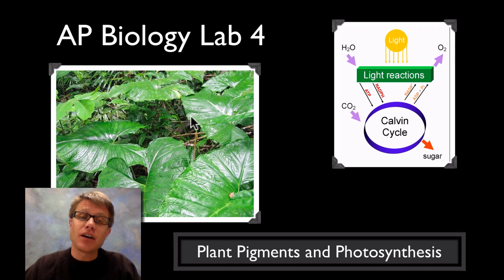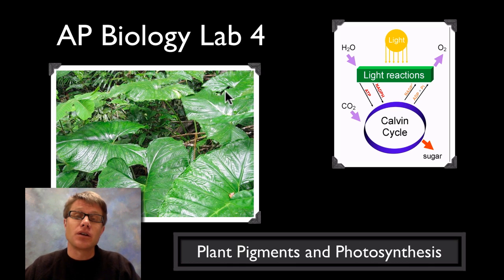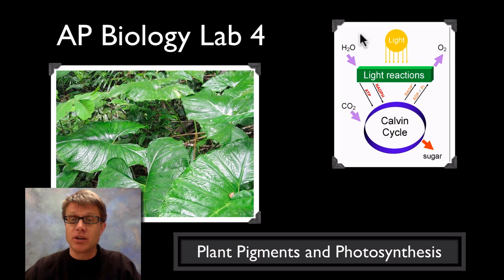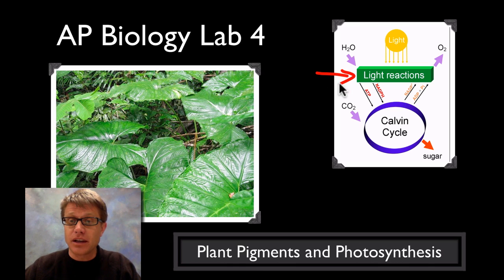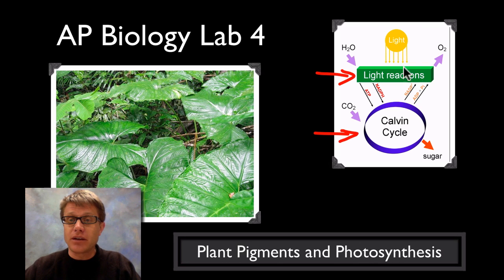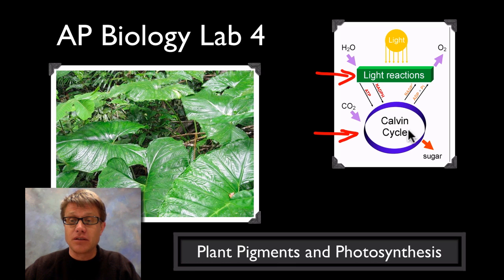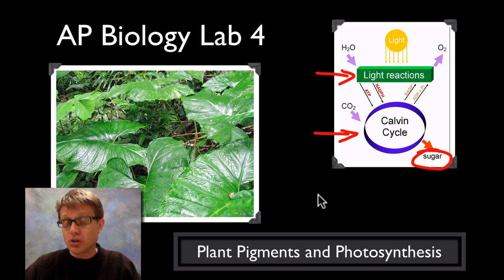Photosynthesis is how plants use the energy of the sun to convert carbon dioxide into usable carbon — sugar is one thing that we need from them. It's broken down into two parts: the light reaction and the Calvin cycle. In the light reaction we're taking in water, splitting that and giving off oxygen, and using that hydrogen to add energy in the Calvin cycle to eventually produce sugar.